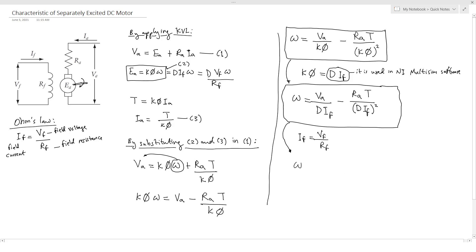We can say that omega also equals VA over D VF over RF minus RA T divided by D VF over RF squared.